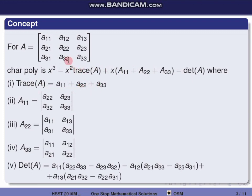Capital A11 is the cofactor from the first row, first column — delete that row and column and take the determinant of the remaining 2×2 submatrix: determinant of A22, A23, A32, A33.